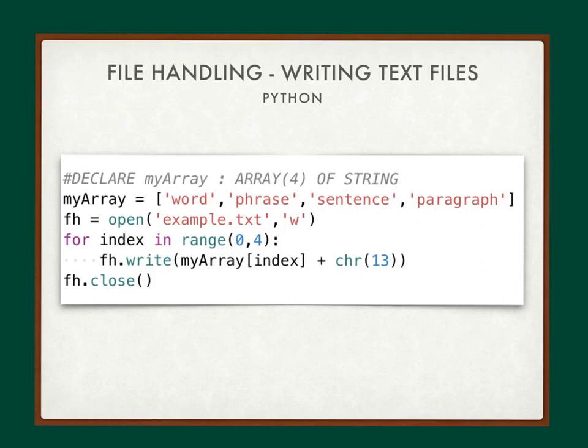Make sure you've taken notes from these slides, then create this program in Python and run it to verify it creates the file you're expecting. Play with it — try removing chr(13) and see what happens. Then look at the example programs that relate to this lesson.